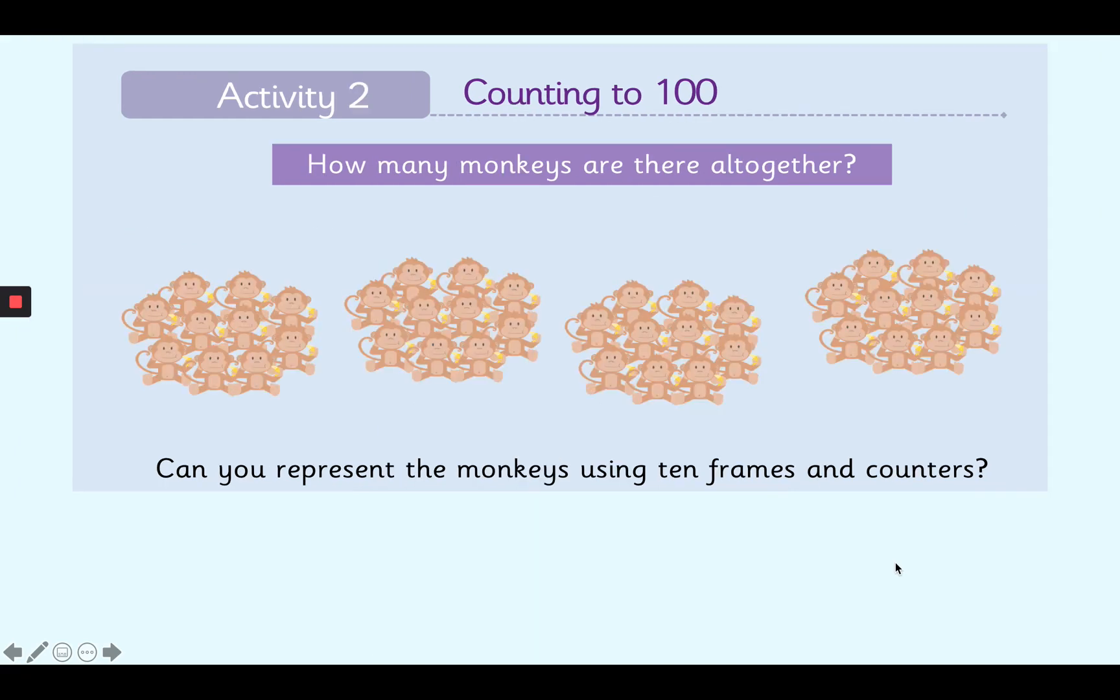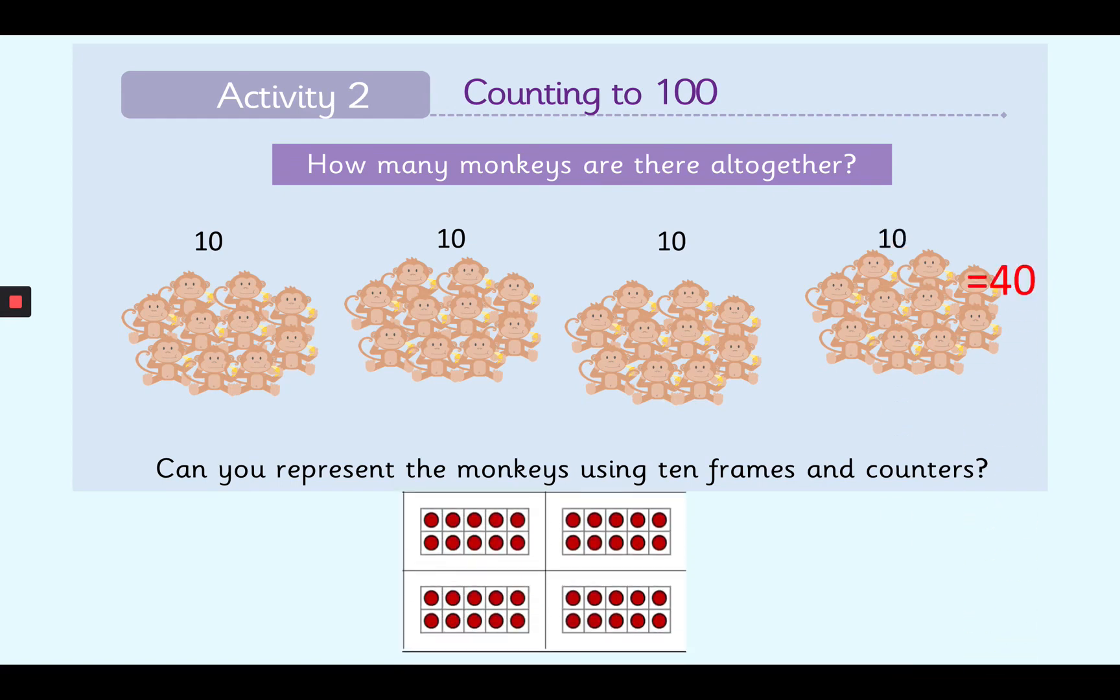Let's do another one. How many monkeys are there all together? Okay, let's see if you got that correct. So 10, 20, 30 and 40. 40 monkeys all together.